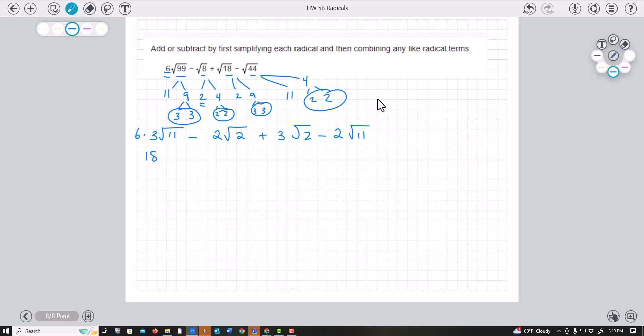This can become 18 square roots of 11 minus 2 square roots of 2 plus 3 square roots of 2 minus 2 square roots of 11. I'm just bringing all this down.